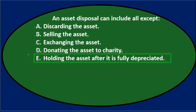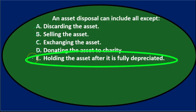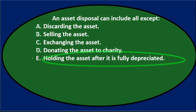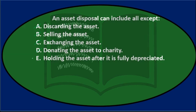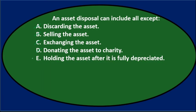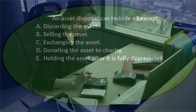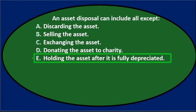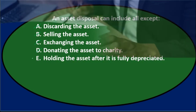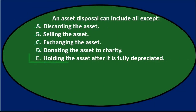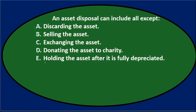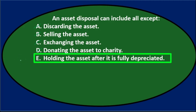So the answer should be E — holding the asset after it is fully depreciated. If we just hold on to the asset when it's fully depreciated, it doesn't mean it has no value. We may have fully depreciated it with a book value of zero on the books, yet it's still useful and we're still using it. That means our estimate of depreciation was not exactly correct. We can't keep depreciating past zero, so it is possible to have assets still in use that we're holding on to that have not been discarded even though they are fully depreciated. So the answer: an asset disposal can include all except holding the asset after it is fully depreciated.